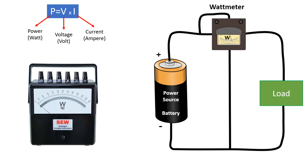A wattmeter is an instrument that measures the power consumption or production in an electrical circuit. It measures the amount of energy being used or produced at a given moment and is typically measured in watts. A wattmeter consists of a pair of coils — a current coil and a voltage coil. The current coil is connected in series with the circuit being measured, and the voltage coil is connected in parallel with it. The interaction between the current and voltage in the circuit causes a deflection in the wattmeter's pointer or digital readout.